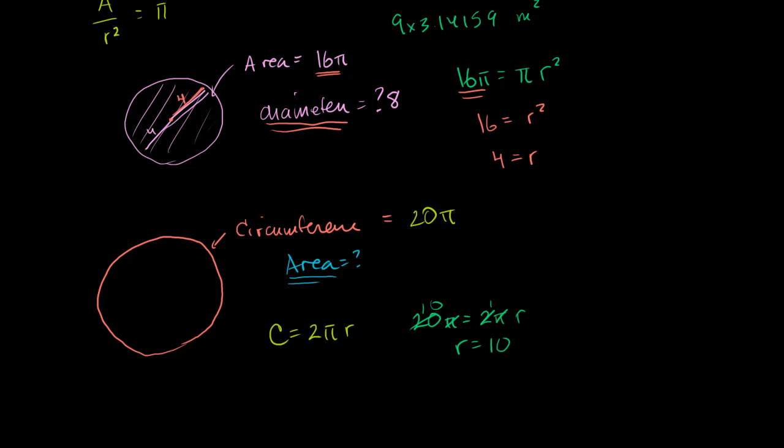So we figured out our radius. Now, we know that the area is equal to πr². And lucky for us, using the circumference, we were able to figure out the radius. Now, using the radius, we can figure out the area. So the area is going to be equal to π times r². r is 10, so 10 squared, which is equal to π times 100. Or it's equal to 100π.